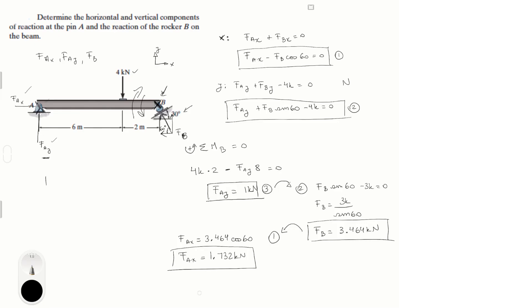So let me write here the answer. For F of A, I got 1.732K in the I direction plus 1K in the J direction. F of B, I have 3.464 kilonewtons going in this direction. If you are interested, this is at an angle of 120 degrees with respect to the positive x-axis. So these are the reactions at the supports at A and B. Final answer.